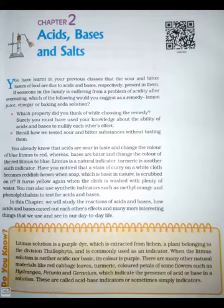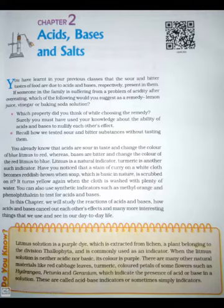How acids and bases cancel out each other's effects and many more interesting things that we use and see in our day-to-day life. Litmus solution is a purple dye extracted from Lichens, a plant belonging to the division Thallophyta, and is commonly used as an indicator. When the litmus solution is neither acidic nor basic, its color is purple. There are many other natural materials like red cabbage leaves, turmeric, and colored petals of some flowers such as hydrangea, petunia and geranium which indicate the presence of acids or bases in a solution. These are called acid-base indicators, or simply indicators.